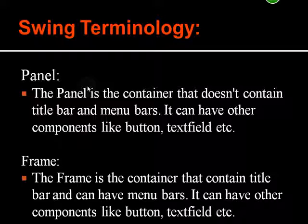Next is frame. Frame is a container which has its own title bar and menu bar, and apart from this it is going to hold components like button, text field, etc. So frame is the container which has the title bar and menu bar, along with holding other components.